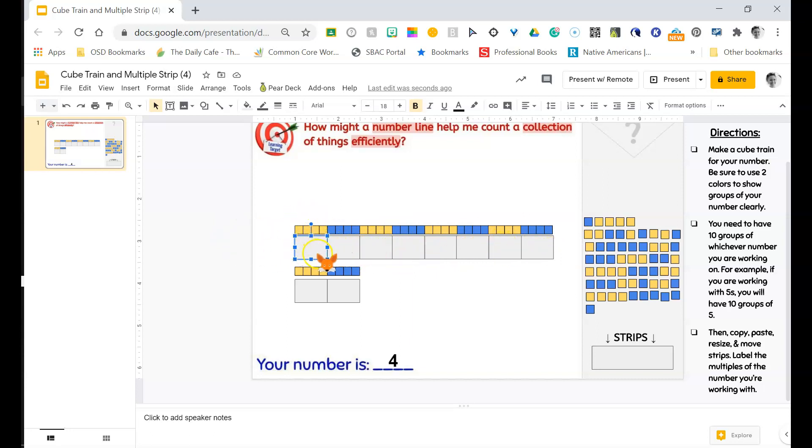Okay so here's my first group of four. Four count with me. Eight, 12, 16, 20, 24, 28, 32, 36, and 40.